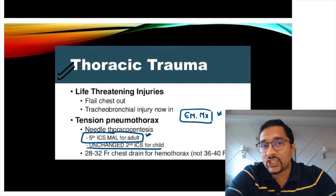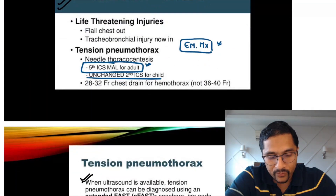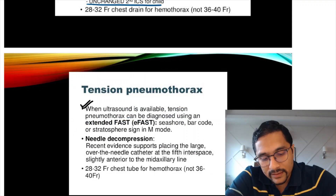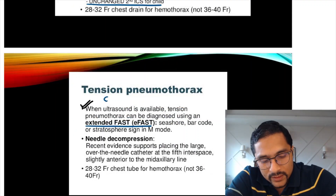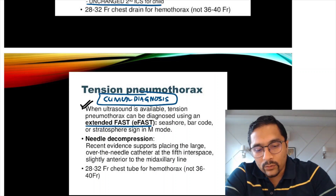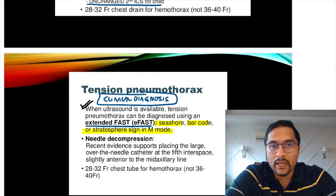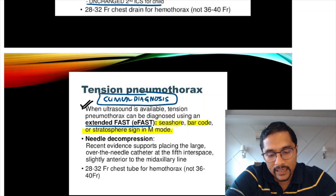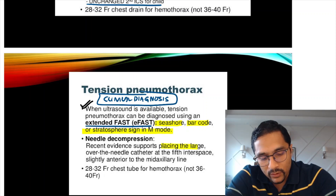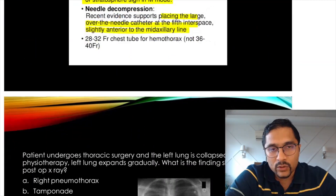For children, the site is unchanged: second intercostal space in the mid-clavicular line. Tension pneumothorax is a clinical diagnosis, but eFAST can also detect it — on eFAST you can see the seashore/barcode or stratosphere M-sign. Emergency management is needle thoracocentesis.